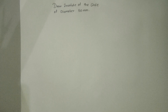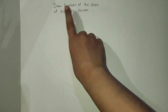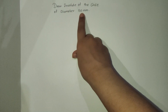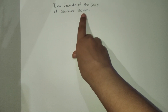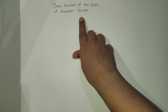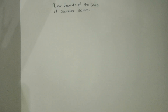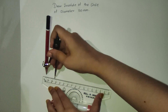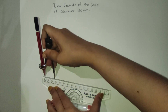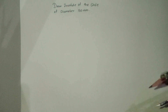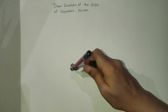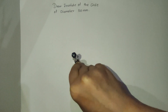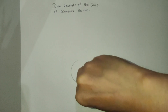In this video we will discuss the construction of an involute. The given question is: draw the involute of a circle of diameter 50 mm. The diameter of the circle is 50 mm, therefore the radius is 25 mm. First, we'll draw a circle of radius 25 mm using compass and scale.